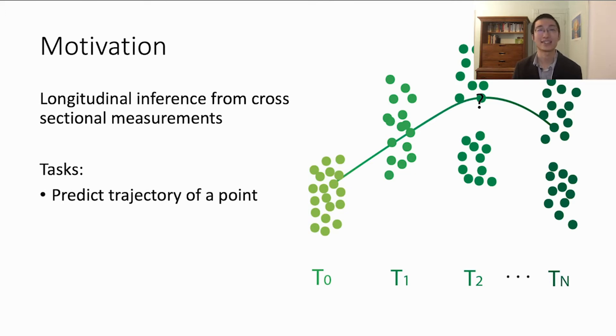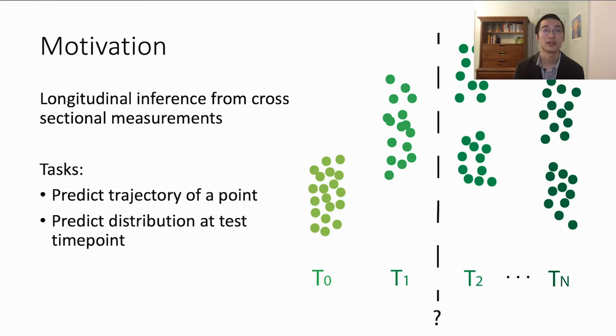One question we might want to ask is, given an individual at a specific time, what is the likely trajectory? In other words, at a new time, what is its state? Another problem might be to infer the likely distribution over states at an unobserved time. We will show how to solve these two tasks efficiently with TrajectoryNet and apply this to single-cell transcriptomic data.